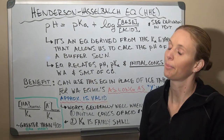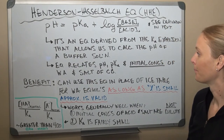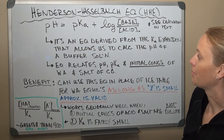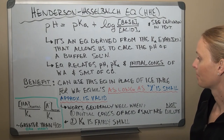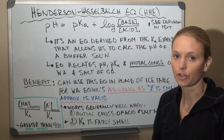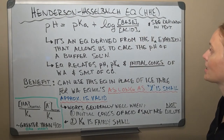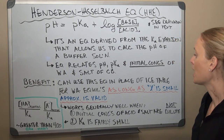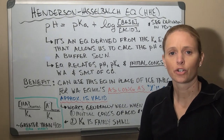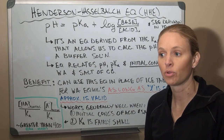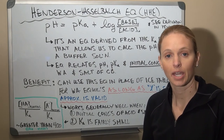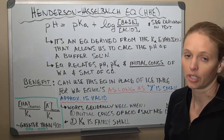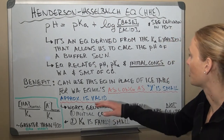It's always log of base over acid when looking at pH. We'll also look at pOH and how this equation gets rearranged, using pKb for the base. This equation is very beneficial because we can use it in place of an ice table when solving for pH for a buffer system — but only under certain conditions, specifically when the x variable can be ignored.